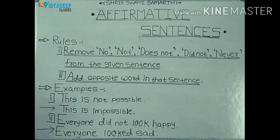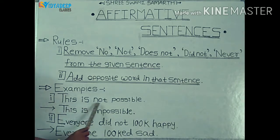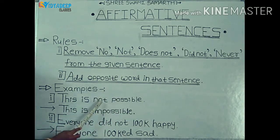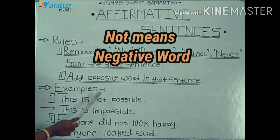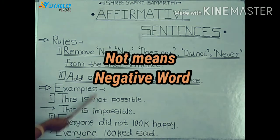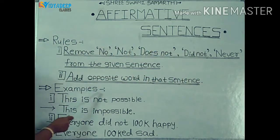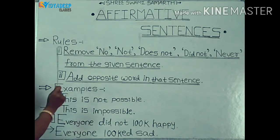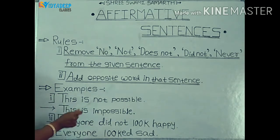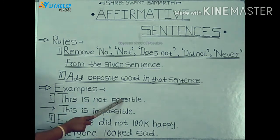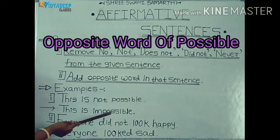Now see the examples. First: 'This is not possible.' Here, 'not' is present — a negative word. According to the first rule, we first remove it. And according to the second rule, use the opposite word. What is the opposite word of possible? That is impossible.